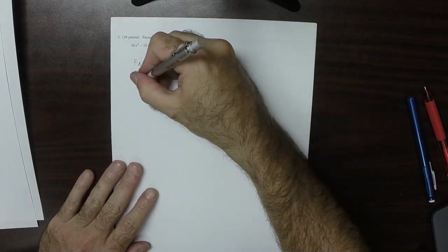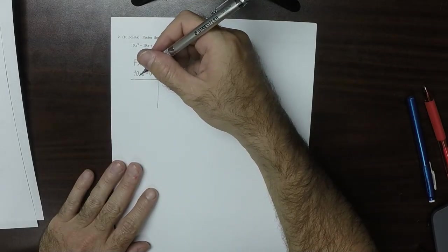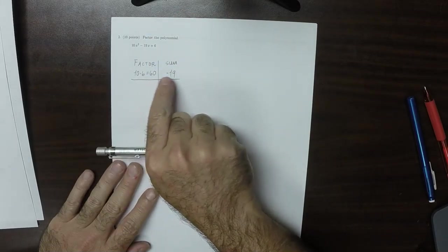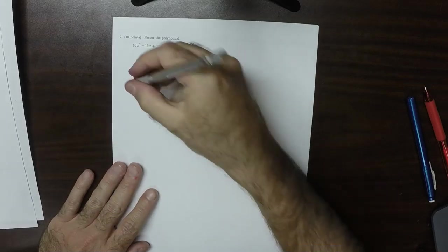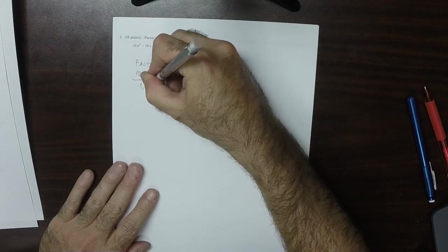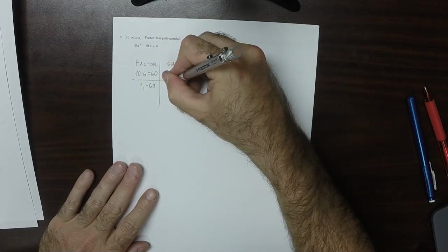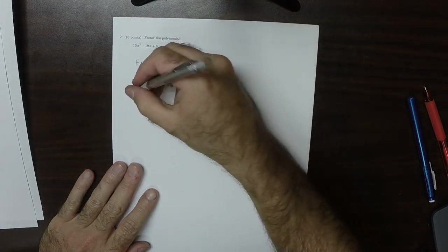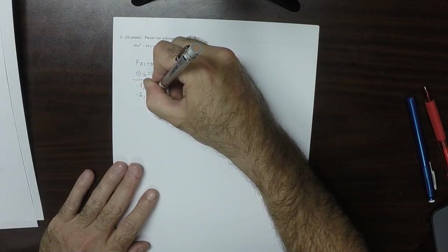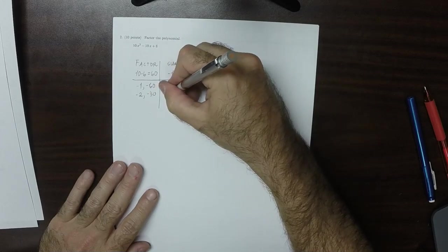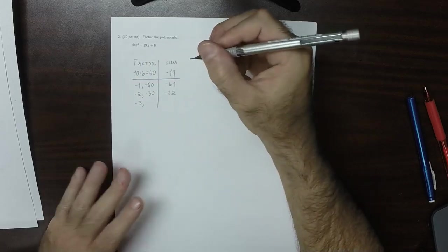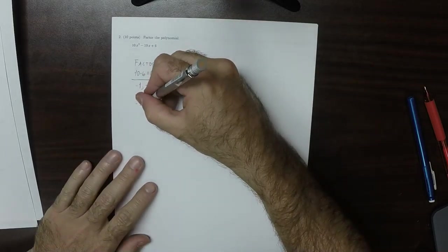So because this is positive, and that's negative, that means they're both going to need to be negative. So how about negative 1 and negative 60? Well, that's negative 61. Okay, that won't work. How about negative 2 and negative 30? That's negative 32. Okay, that's not going to work. How about negative 3 and negative 20? That's negative 23.